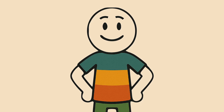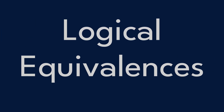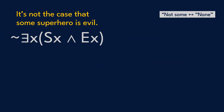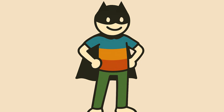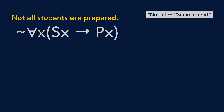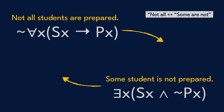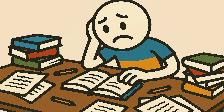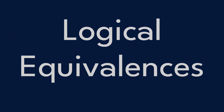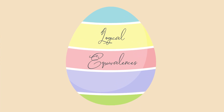You now have everything you need to spot some logical equivalences. 'It's not the case that some superhero is evil' is logically no different from 'No superhero is evil' — Batman approves. Or when I say 'Not all students are prepared,' that's logically equivalent to 'Some student is not prepared' — which, if you've been to college, checks out. Once you've got logical equivalences dialed in, you'll start seeing them everywhere. It's logic's version of hidden Easter eggs.